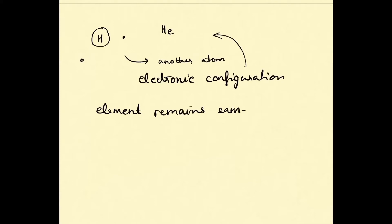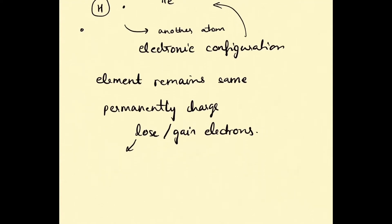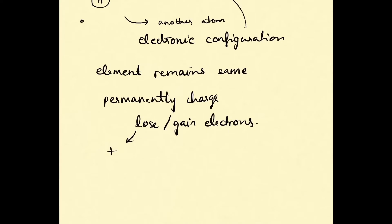The charge of the element changes. In ionic bonds, they become permanently charged because they actually lose or gain an electron. If they're losing an electron, they'll be left with more protons and be positively charged. When they gain, they'll get another electron and be negatively charged.